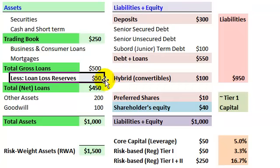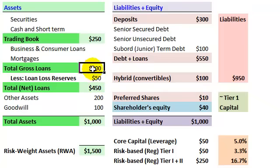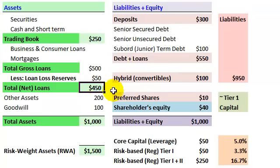This is where management has used discretion to say: of this $500, we expect to not recover 10% — that's the credit risk that manifests as defaults on the loan. As a management discretion item, it can be used to smooth earnings. So the $500 gross minus management's estimate of expected losses of $50 equals $450 in net loans, which are assets to the bank.